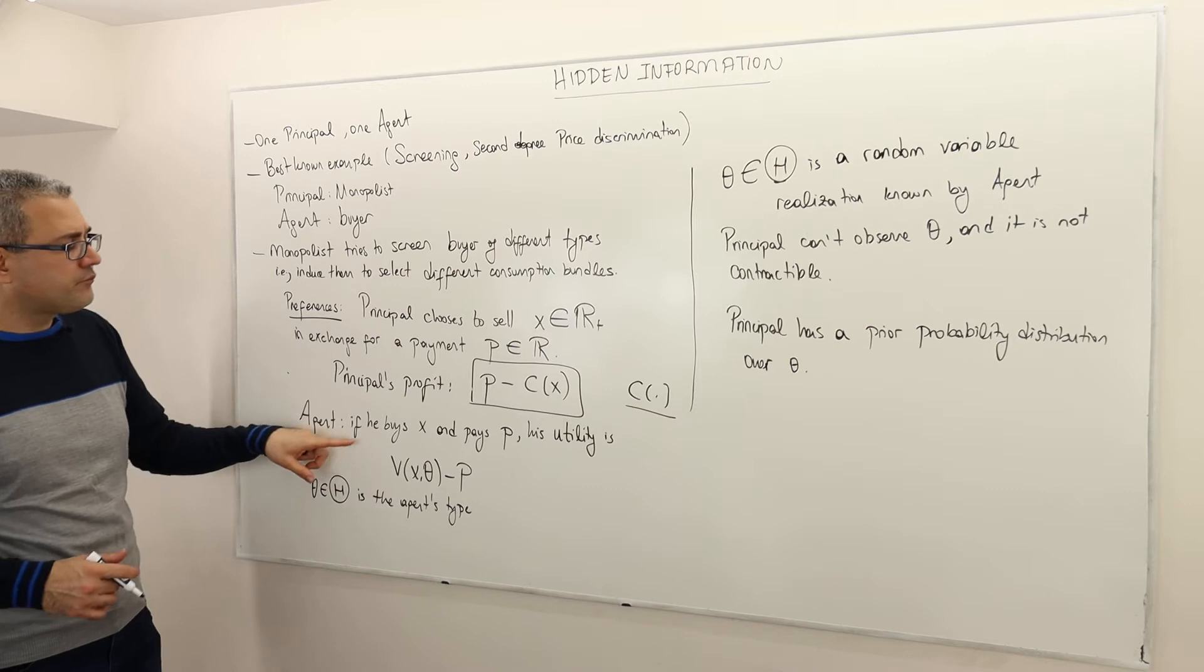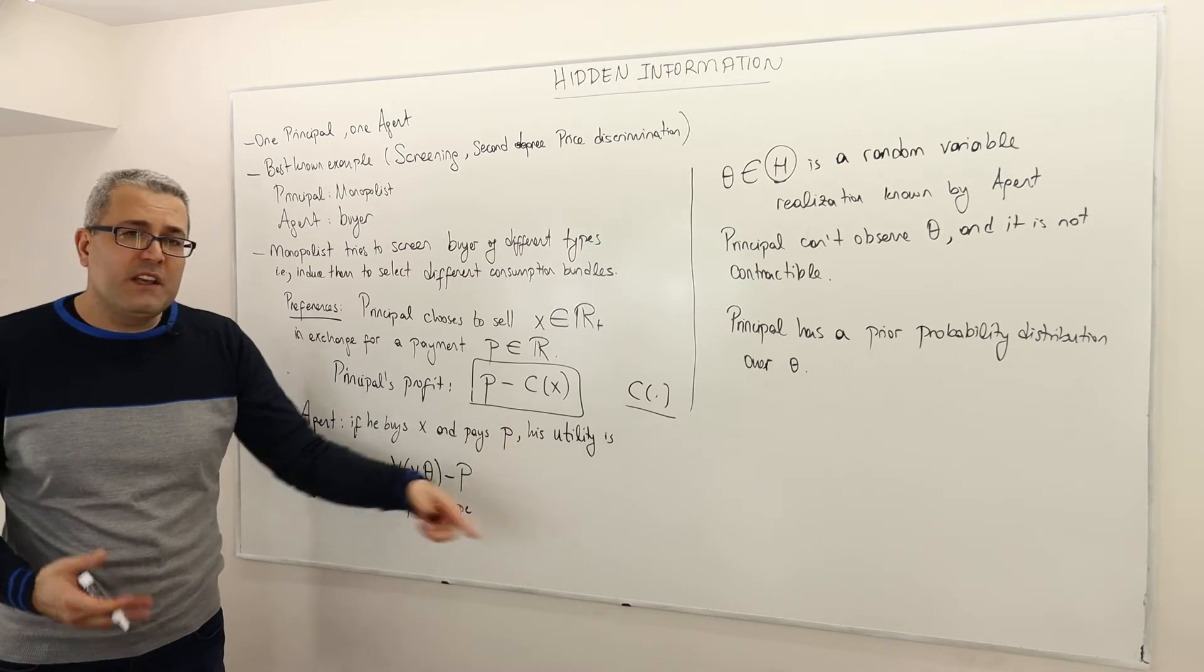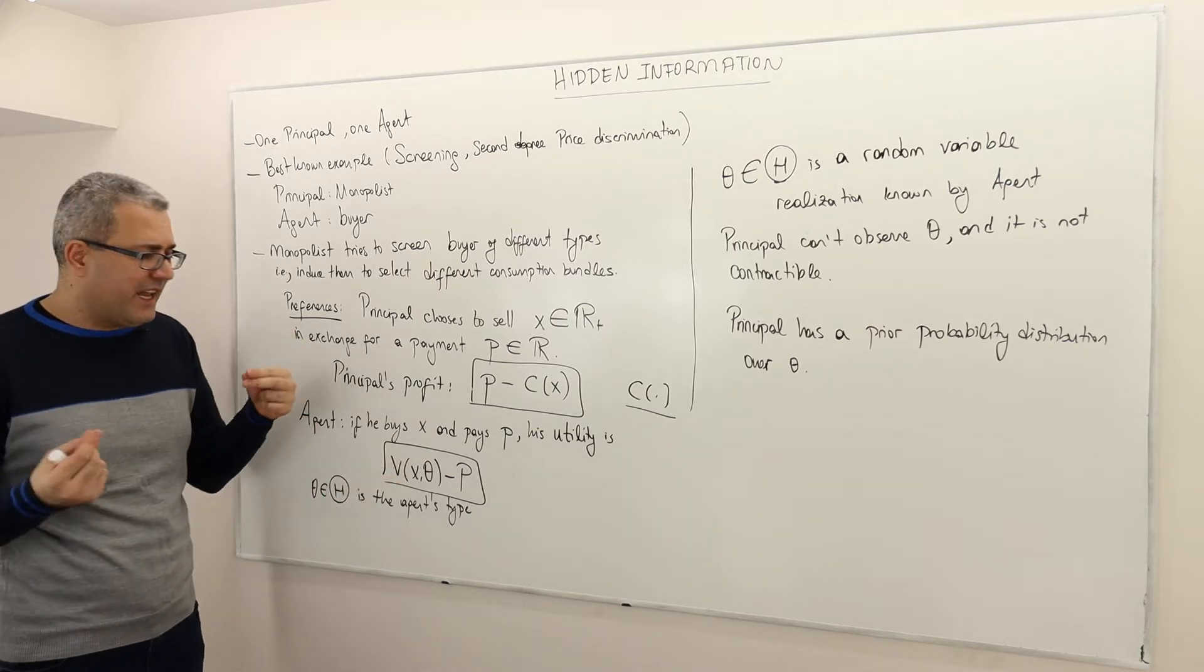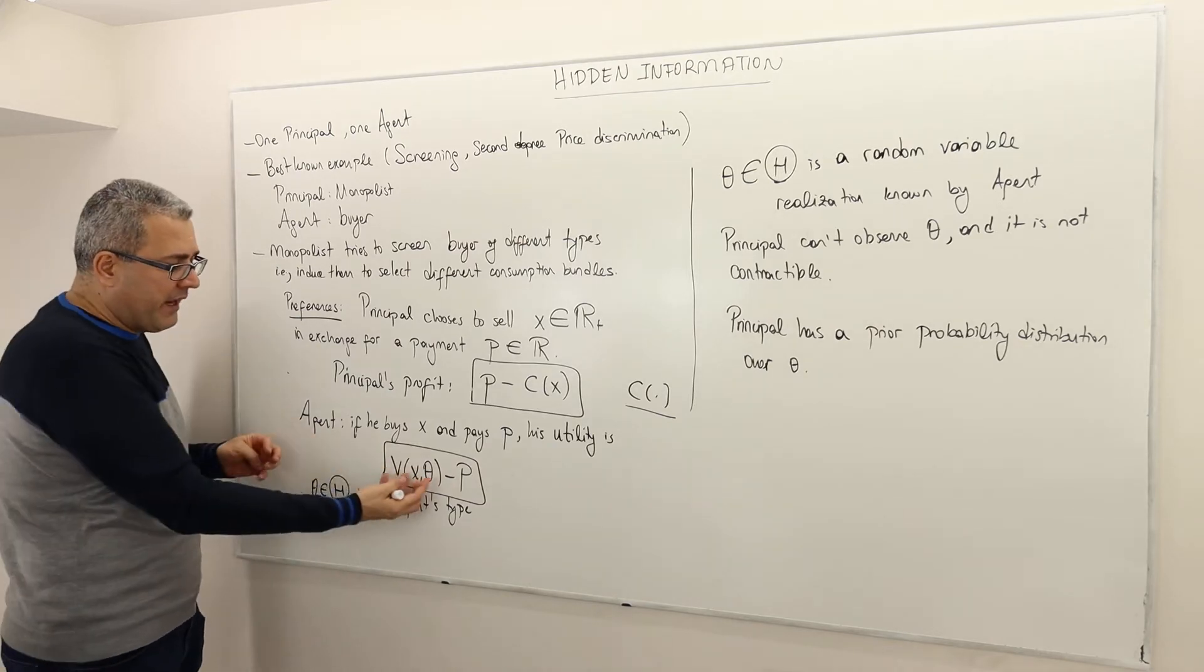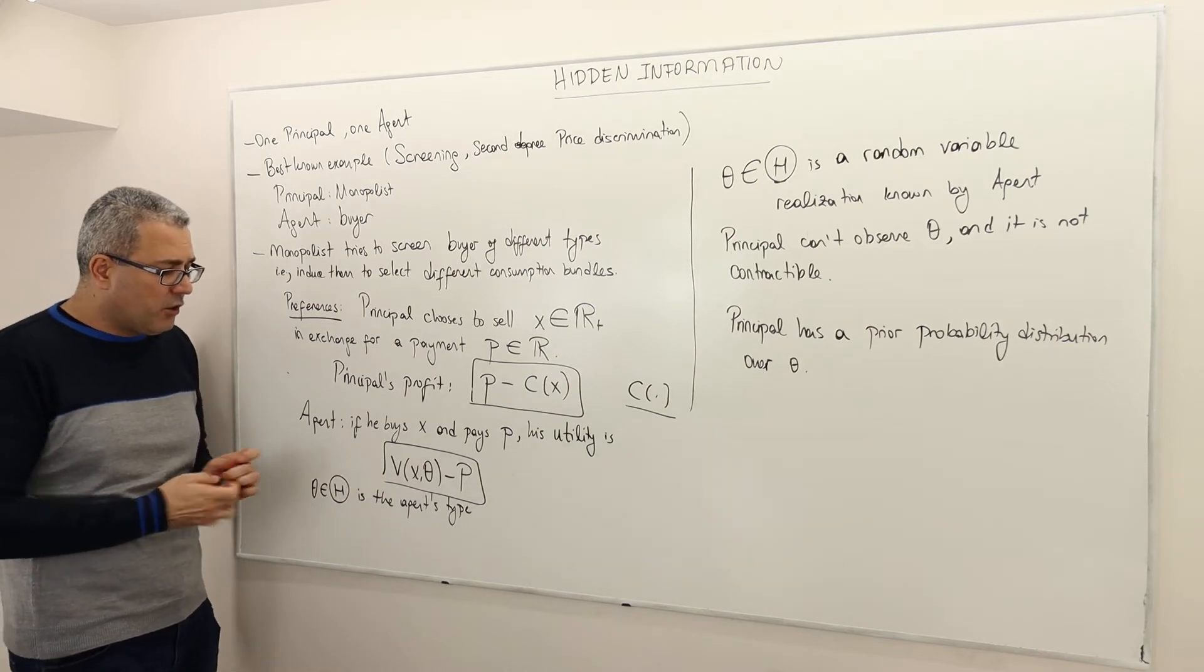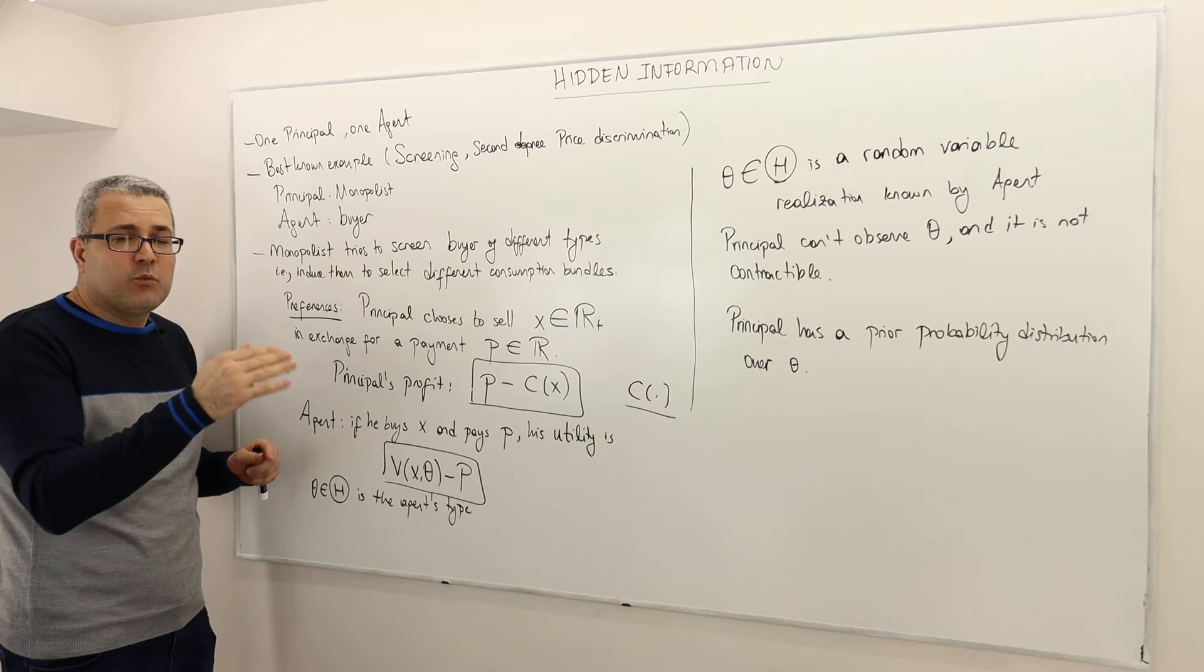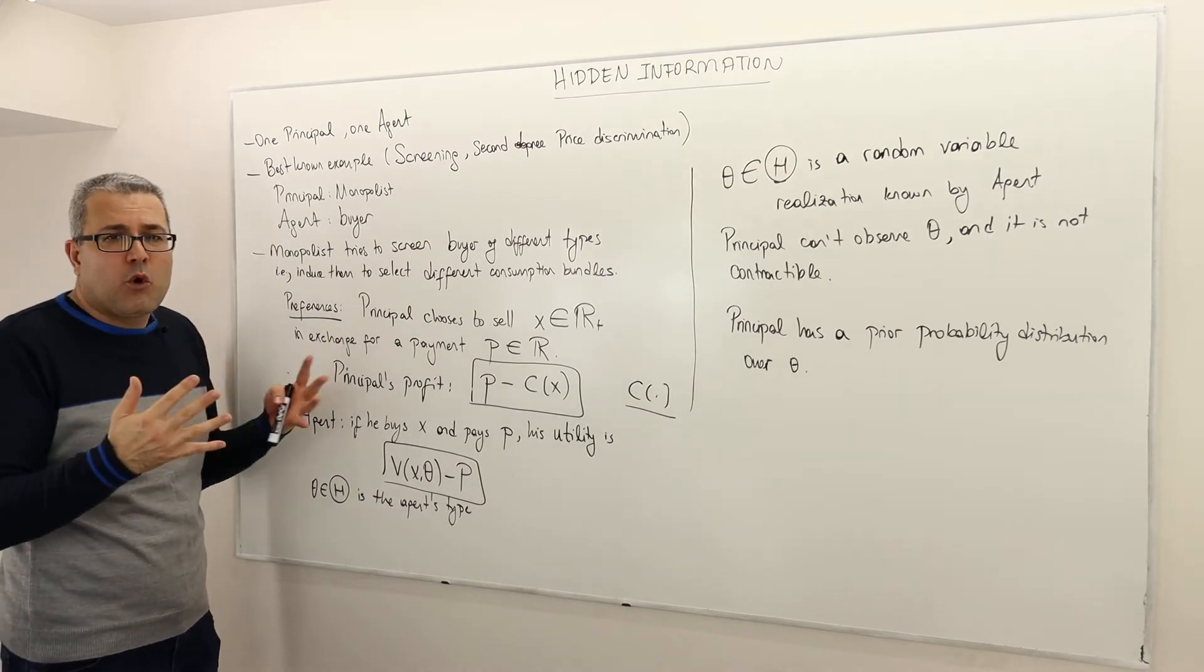What about the agent? If the agent buys X and pays P dollars to the monopolist, his utility is going to be V, a function of two things: X and theta, minus P. So this is basically benefit minus cost. This V function depends on X. Usually V is an increasing function on both components, meaning the more X, whatever this X is, the more X you buy, the happier, the more benefit you're going to get.